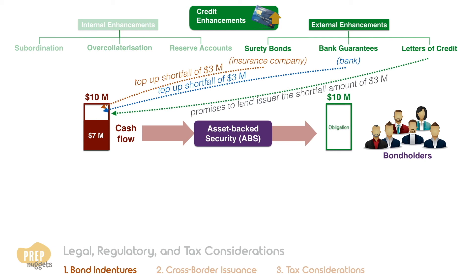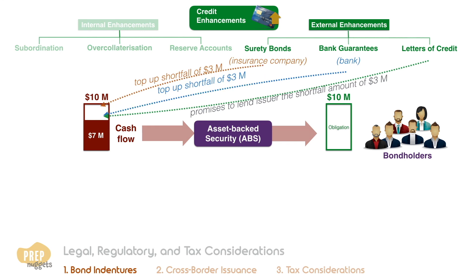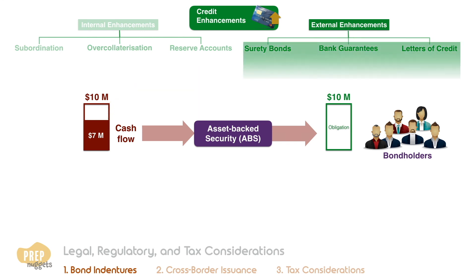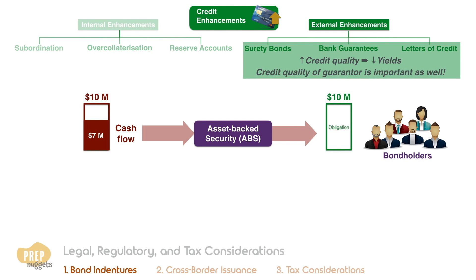A letter of credit works under similar circumstances. The difference is that it is a promise to lend the shortfall amount to the issuing entity, instead of paying out the amount directly. While all three of these external credit enhancements increase the credit quality of debt issues and decrease their yields, deterioration of the credit quality of the guarantor will also reduce the credit quality of the covered issue.